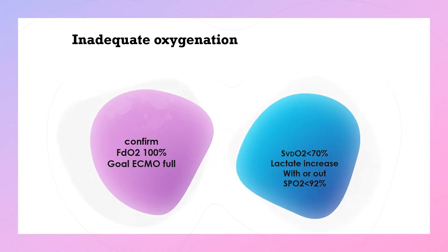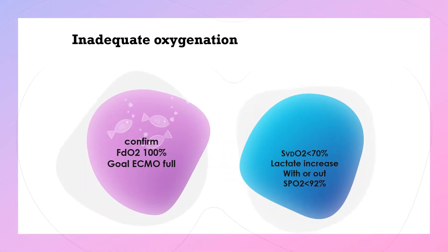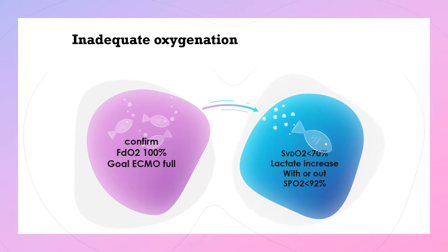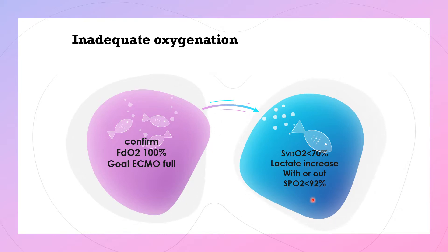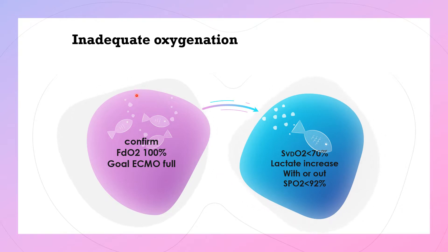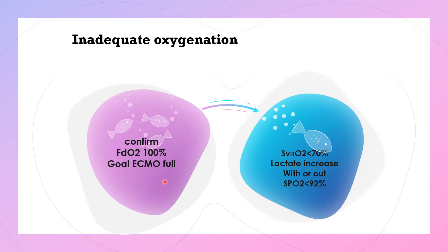The first complication we should discuss is inadequate oxygenation. That means oxygen saturation in the drainage cannula is less than 70%, with increasing lactate, with or without SpO2 saturation from the patient's site less than 92%. Before judging that, we should confirm that FiO2 from the ECMO side is 100% and the patient has full ECMO flow.